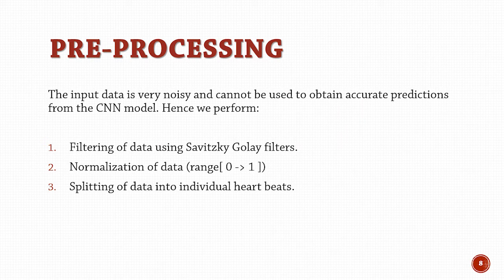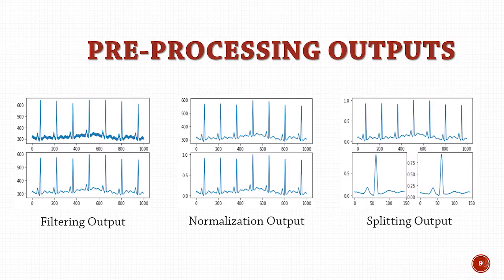The input data is very noisy and cannot be used to obtain accurate predictions from the CNN model. Hence, to enhance the signal quality, we perform the following operations: filtering the signal using a second-order Savitzky-Golay filter; normalization of data between the range of 0 to 1; and splitting up of data into individual heartbeats as opposed to a single stream of several heartbeats. The filtering algorithm eliminates the noise from the input signal, the normalization algorithm changes the signal to lie between the range 0 to 1, and the splitting algorithm separates and provides the individual heartbeats.